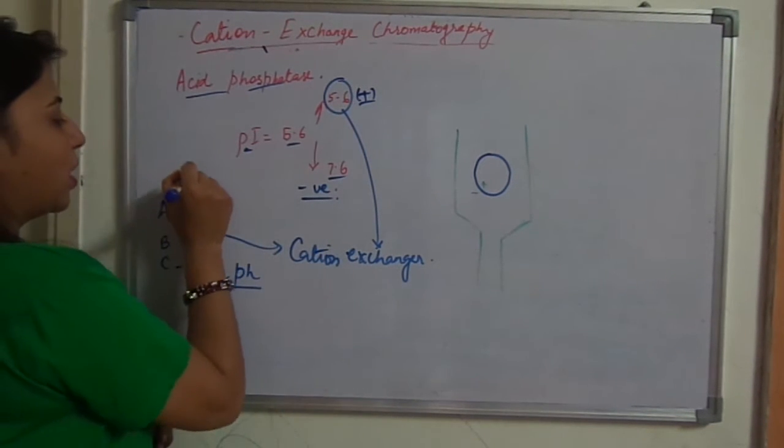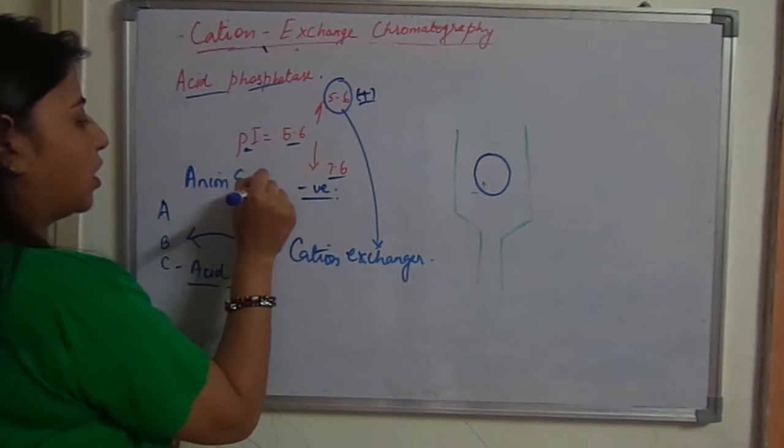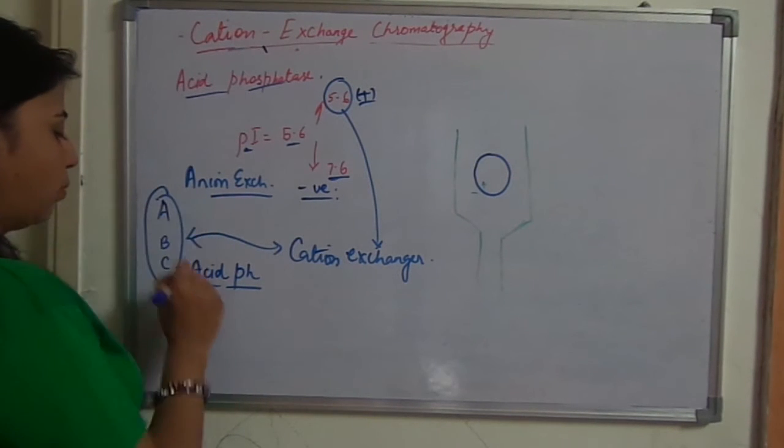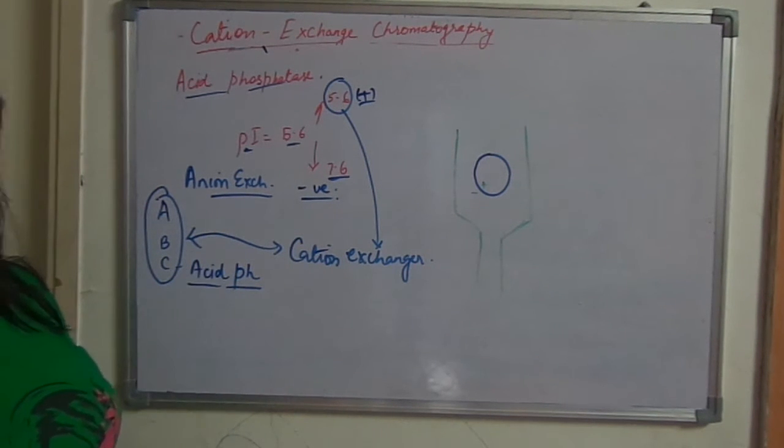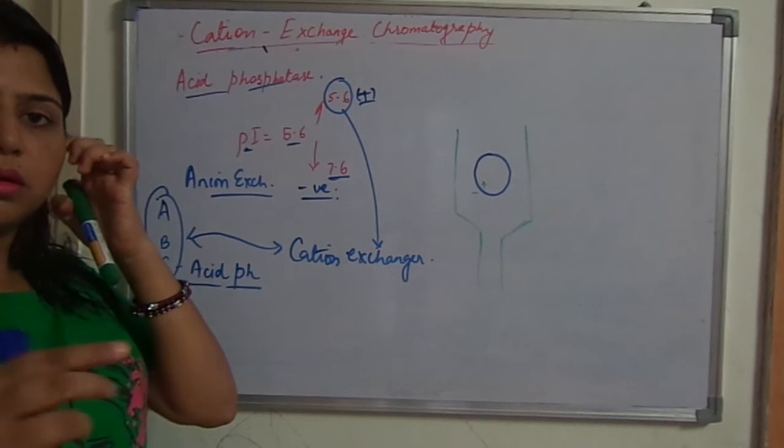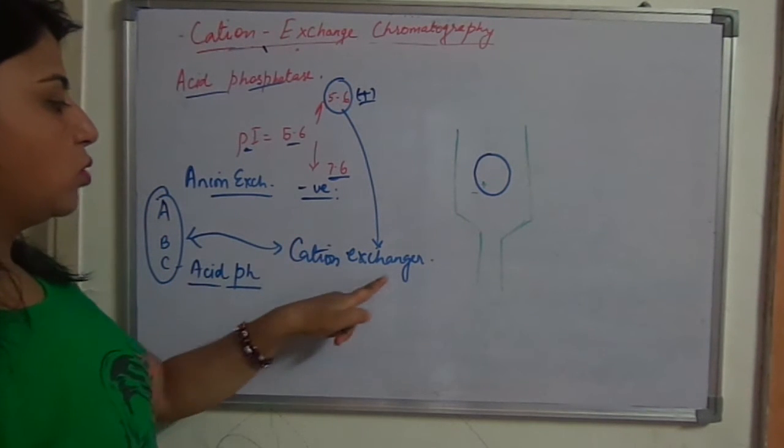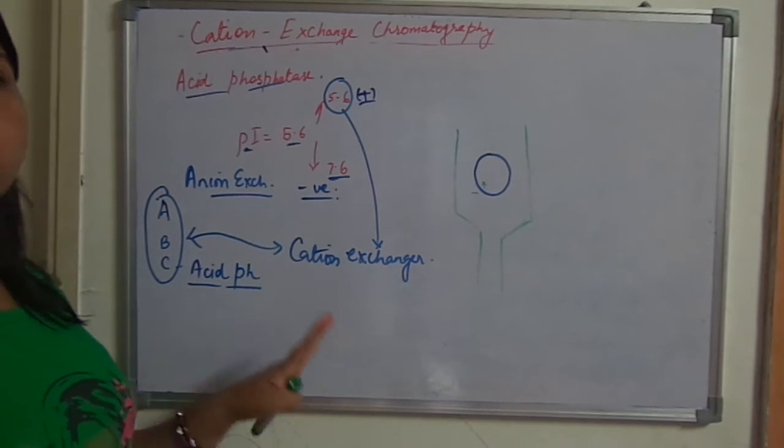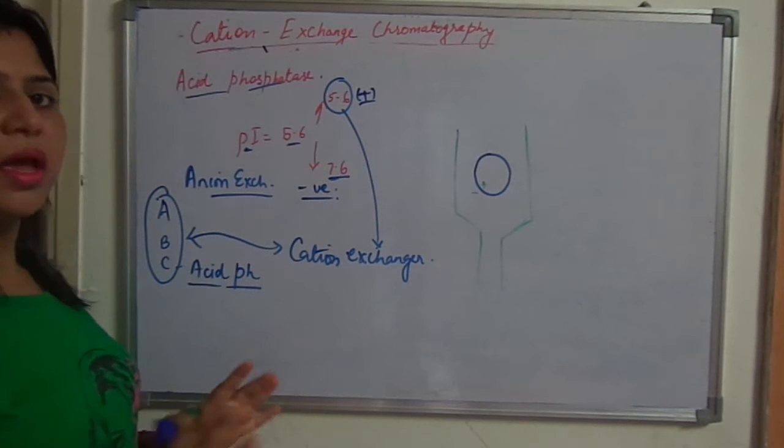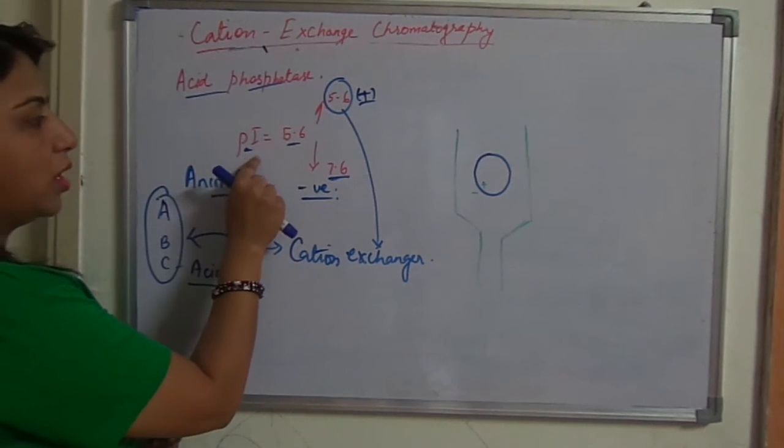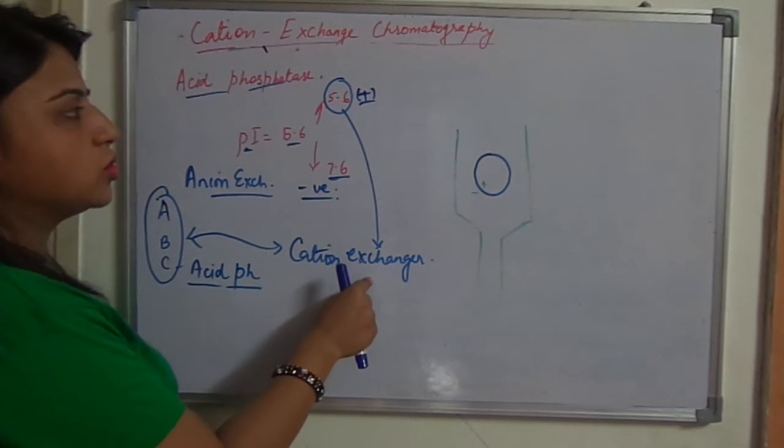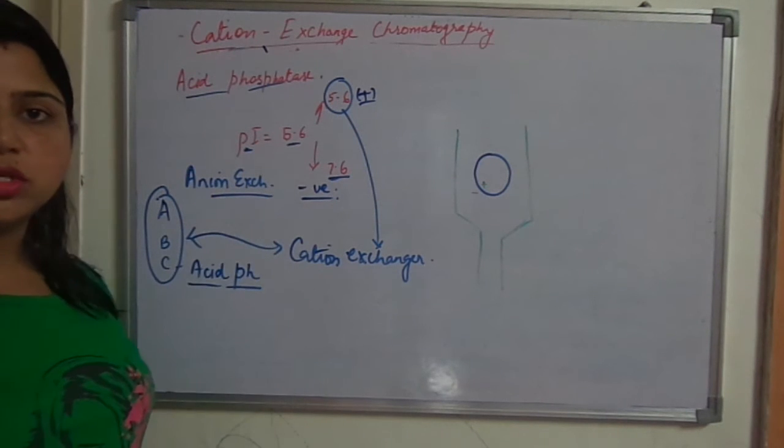If you have an anion exchanger available in your lab, you can use it at pH 7.6. This sample ABC which is containing the enzyme acid phosphatase. Now pepsin which I discussed in the last video was different. It cannot be used in presence of a cation exchanger because it is a totally rare case. But in general, most of the enzymes and most of the proteins have pI, the isoelectric points somewhere in between. They can be used with a cation exchanger also and they can be used with an anion exchanger also.